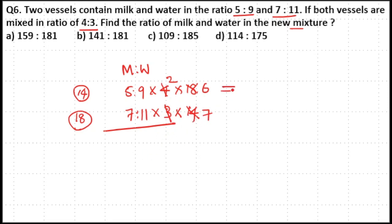The first ratio becomes 6 times 2 is 12, 12 times 5 is 60 to 12 times 9 is 108. The second ratio becomes 7 times 7 is 49 to 7 times 11 is 77.